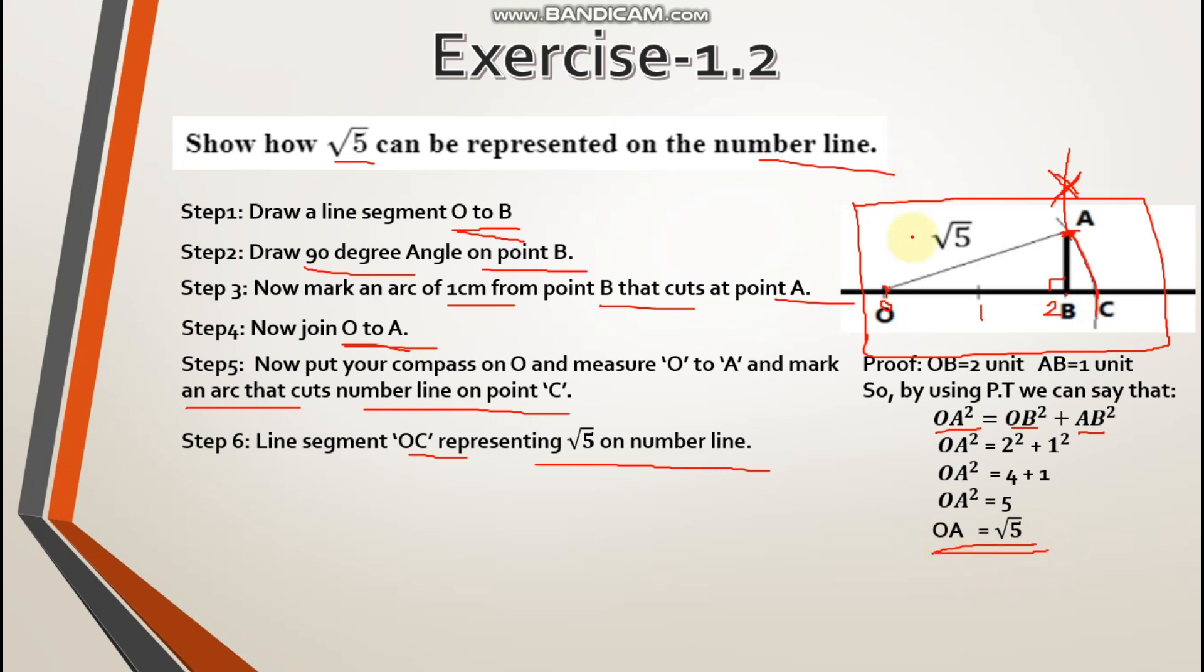Basically our OA is root 5, and by measuring OA we drew this arc. So this arc, this point, is root 5. This is your first method.